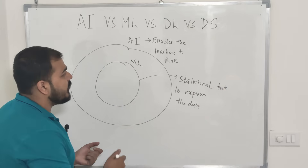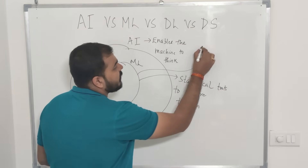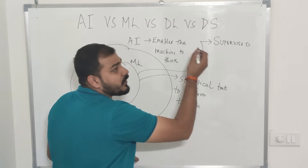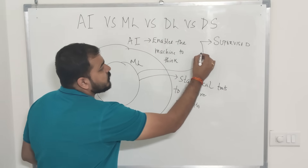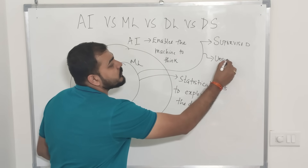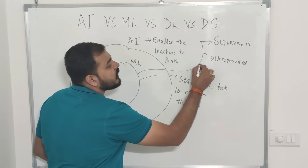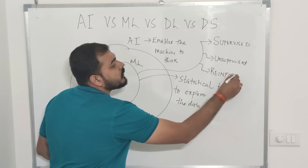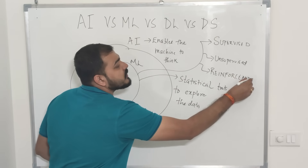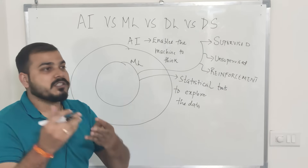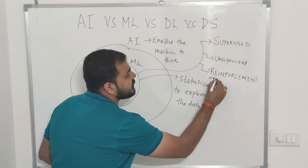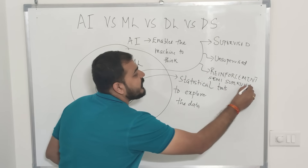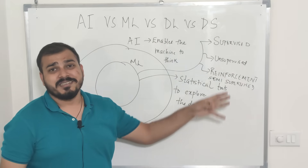In machine learning, you have three different approaches. One is supervised machine learning. The second technique is unsupervised machine learning. The third technique is something called reinforcement learning, which is also called semi-supervised machine learning.